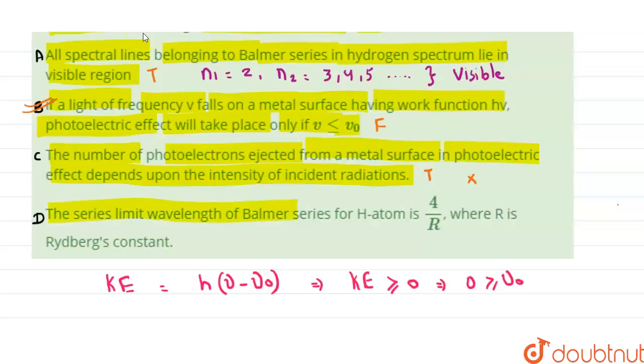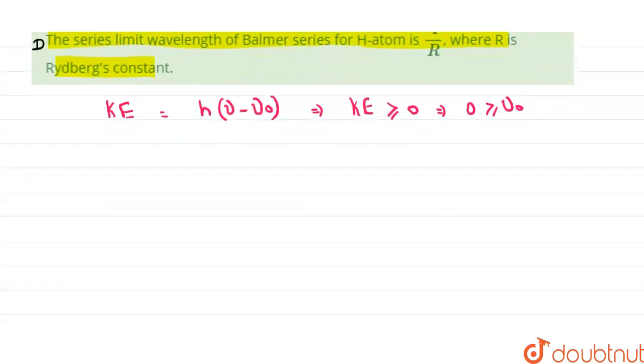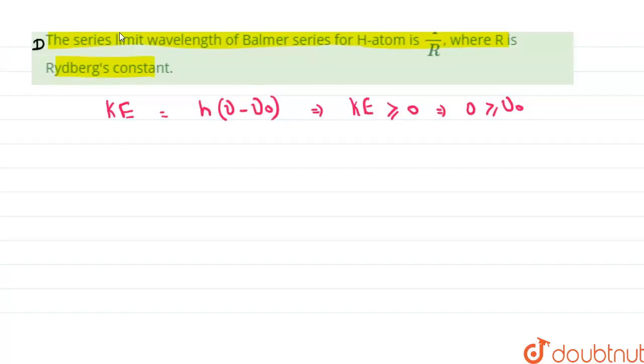the series limit wavelength of the Balmer series for hydrogen atom is 4/R, where R is Rydberg's constant. What's the meaning of series limit? The series limit of the Balmer series is the wavelength that corresponds to the transition between